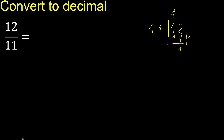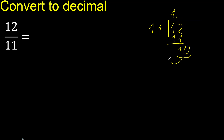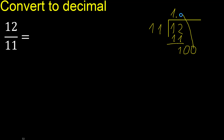There is no number to bring down, therefore complete with 0. Now we have 10. 10 is less, therefore next. There is no number, therefore complete with 0 again.